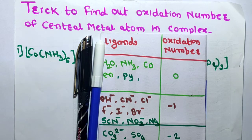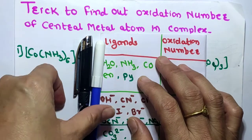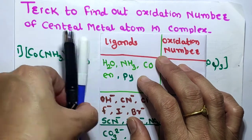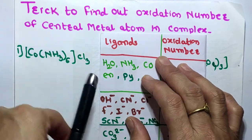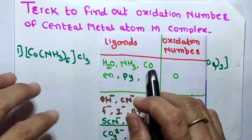Welcome to my channel. In this channel I will teach chemistry and maths in the simplest way. Today's topic is a trick to find out the oxidation number of the central metal atom in a complex.